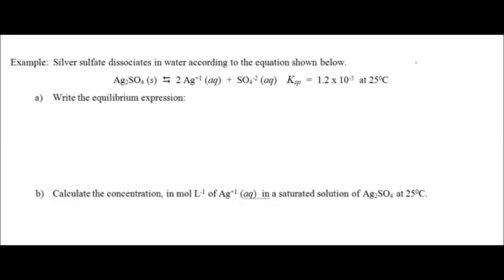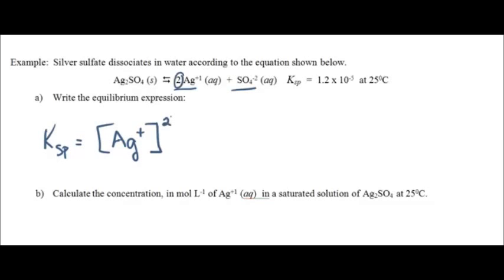Reviewing how to write the KSP expression: it's always products over reactants. KSP equals the products — we have our ions, and we never include solids or liquids. Silver has a +1 charge; since it has a coefficient of 2, we square that. The other product is sulfate with a −2 charge and a coefficient of 1. We don't put silver sulfate in the denominator because it's a solid — you can see the phase designation. So we're done with part A.